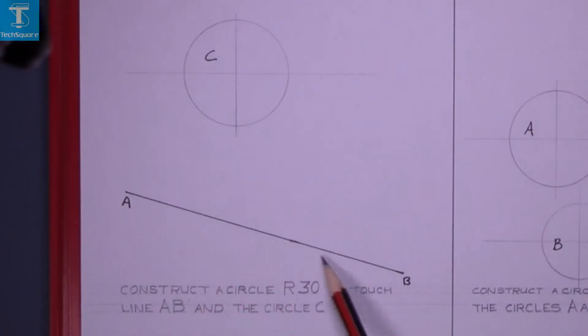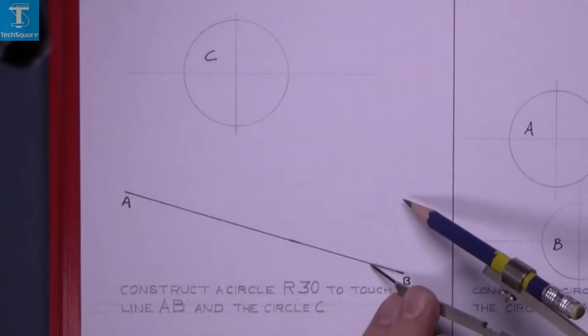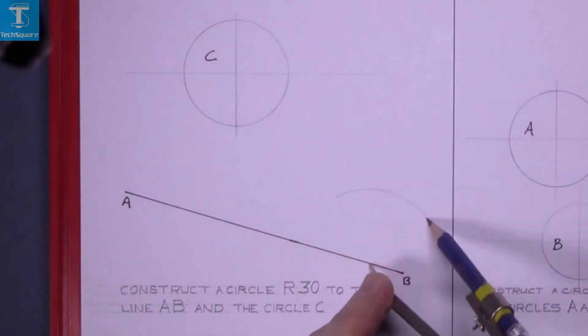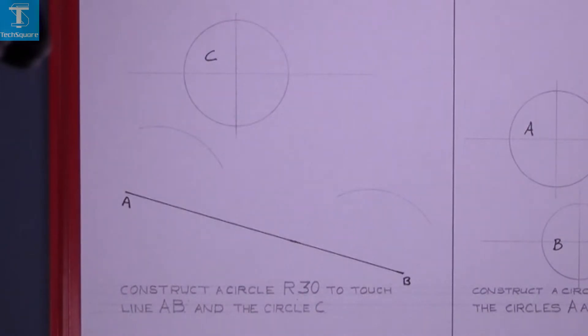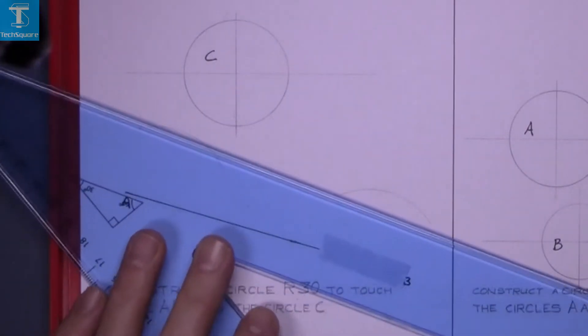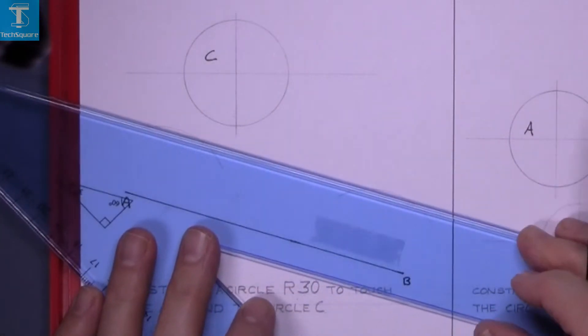So we set the compass to 30, put the point of the compass on one end of the line, mark an arc and do the same on the other end. Mark an arc and then draw a line, a tangent to those two arcs.